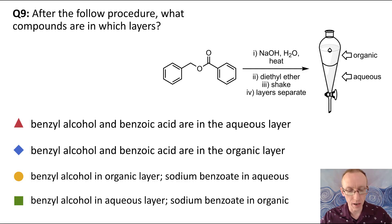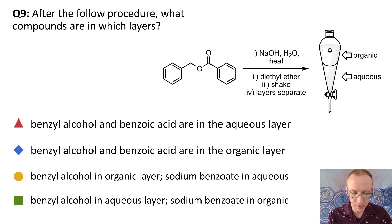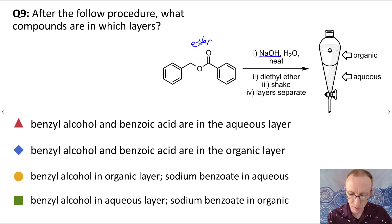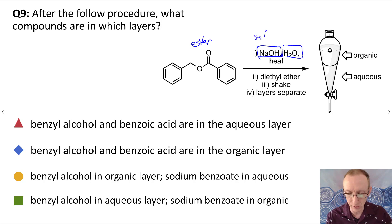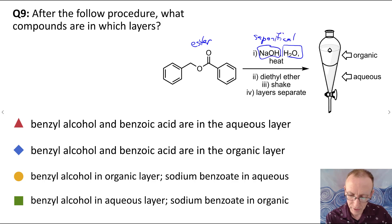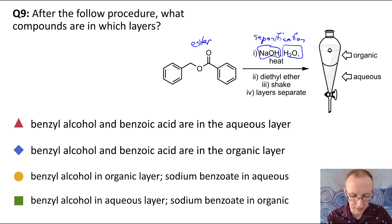Question nine. We're looking at a reaction: this is an ester and we're treating it with a strong base, sodium hydroxide, in water — which is classical conditions for hydrolysis, or what's also called saponification. Under these conditions, we're going to hydrolyze the ester into an alcohol and a carboxylic acid, and that's the bond that's going to break.